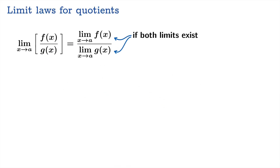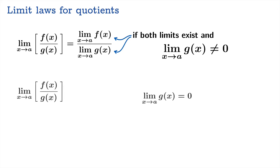Both of these limits need to exist on their own, and of course the limit of the denominator function cannot be zero. In that case, you have the classic limit law for quotients.